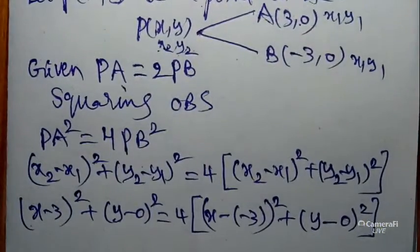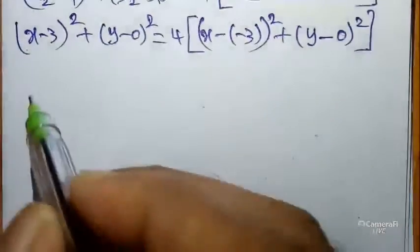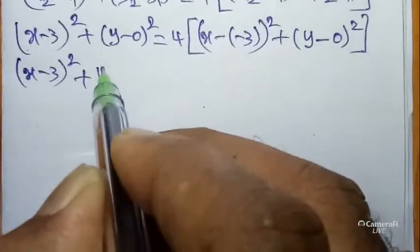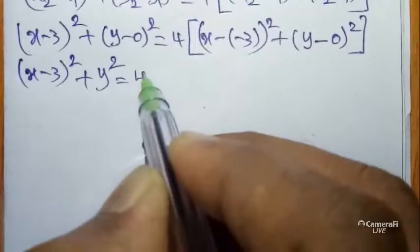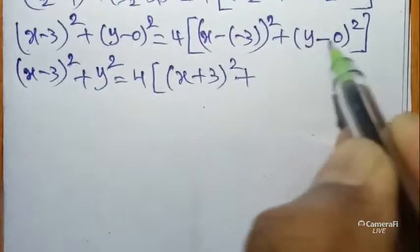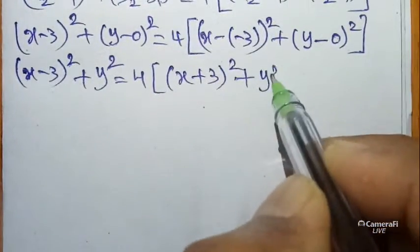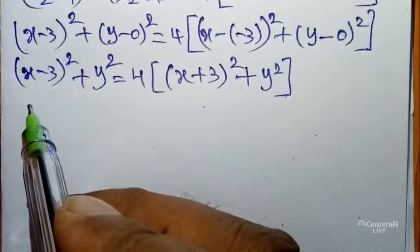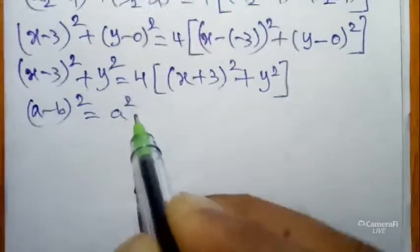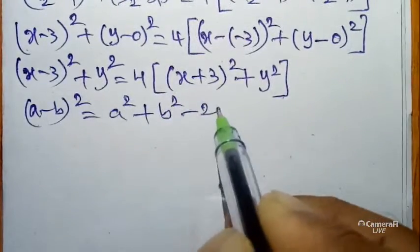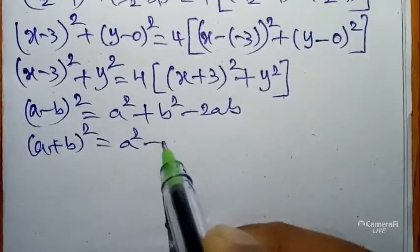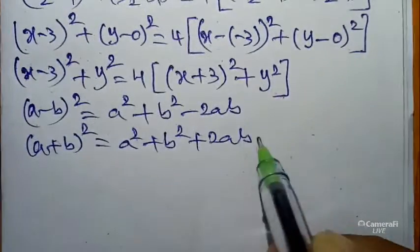Expanding the left side using (a - b)² = a² + b² - 2ab: (x - 3)² + y². And the right side uses (a + b)² = a² + b² + 2ab. So left side: x² - 6x + 9 + y². Right side: 4·(x + 3)² + 4y².